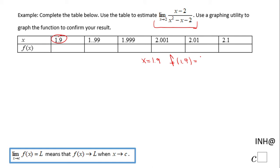f of 1.9 which is 1.9 minus 2 over 1.9 squared minus 1.9 minus 2. You put this one in a calculator. Be careful how you put it in, and I end up with 0.344. That is the value of the function at 1.9.